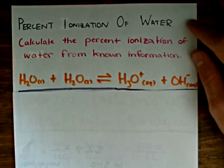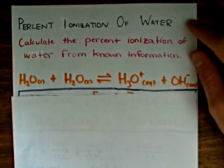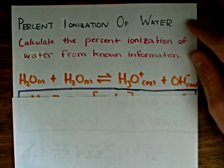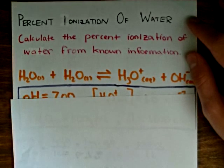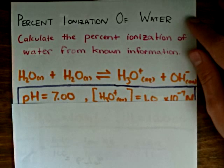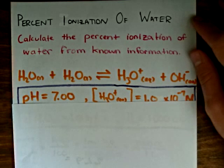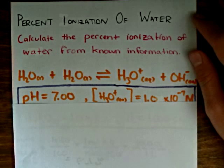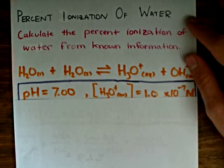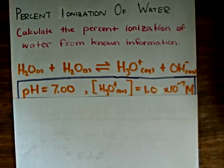Just from this equilibrium, we know that pure water will have a pH of 7.00, which corresponds to a hydronium ion concentration of 1.0 times 10 to the negative 7 moles per liter.